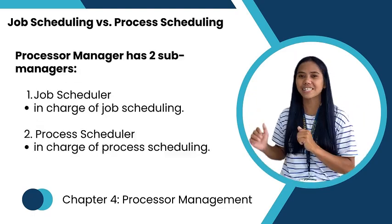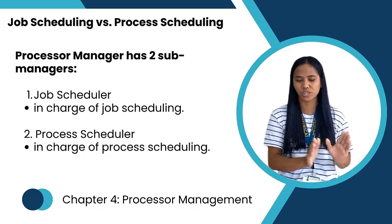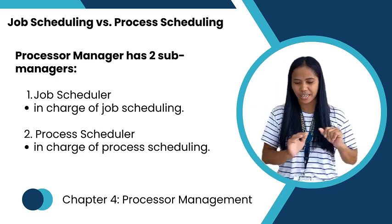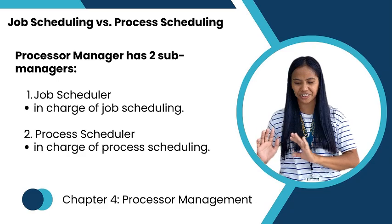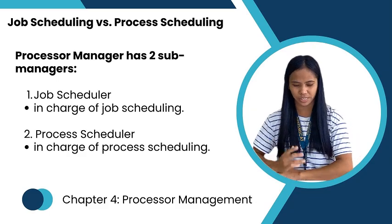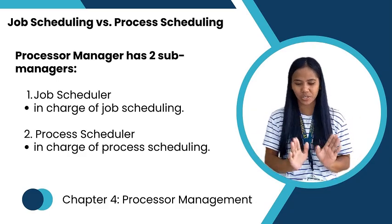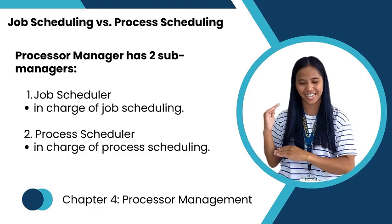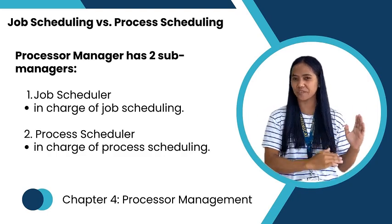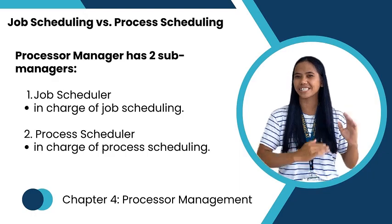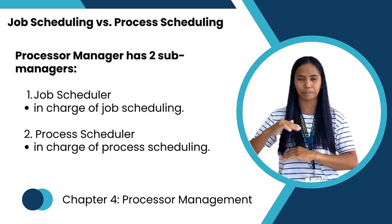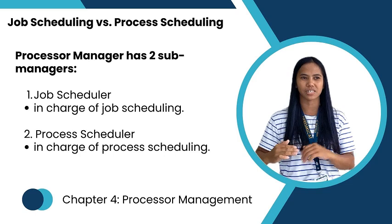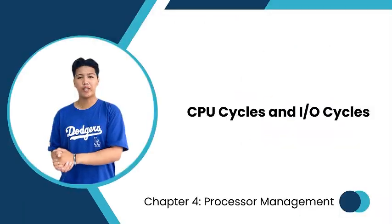In summary, the job scheduler deals with managing batches of jobs in a non-interactive environment, while the process scheduler handles the execution of processes in an interactive or time-sharing system.